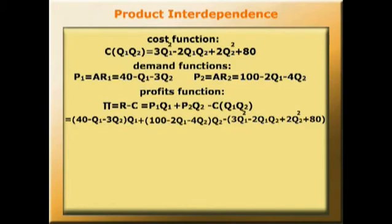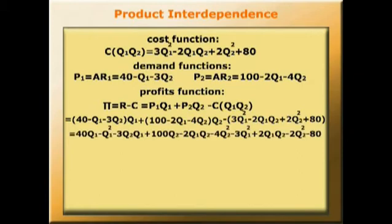Now we can multiply all this out, so that we know how much profit it will be. This will give us 40Q1 - 2Q1² - 3Q2Q1 + 100Q2 - 2Q1Q2 - 4Q2² - 3Q1² + 2Q1Q2 - 2Q2² - 80.